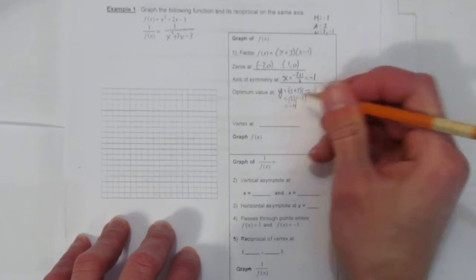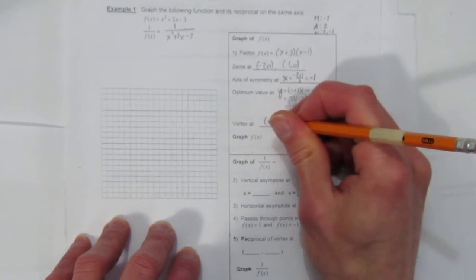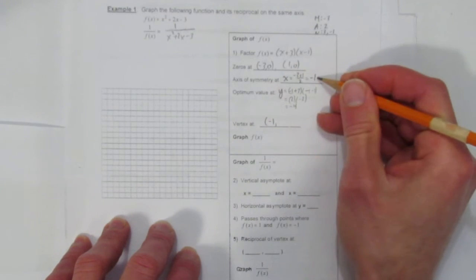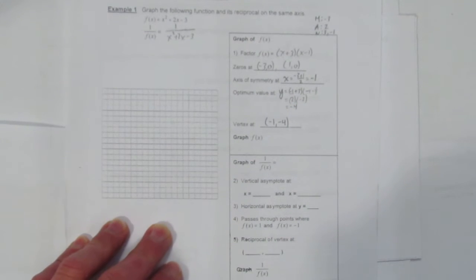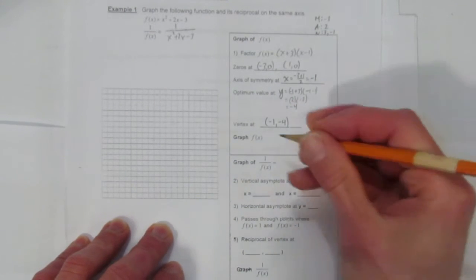So the vertex of the original is at (-1, -4). That's the y value of the vertex. Okay, let's graph the original.